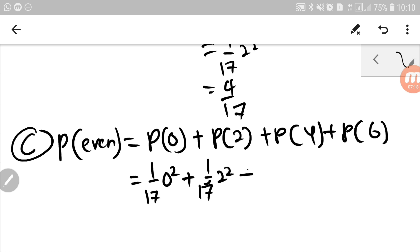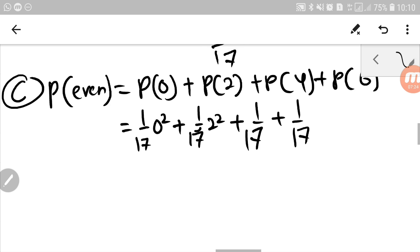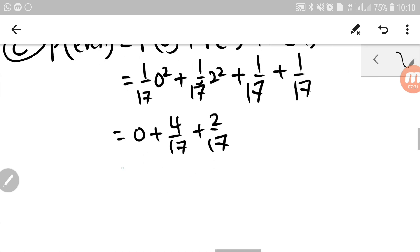plus 1 over 17, 2 square, plus 1 over 17, plus 1 over 17. So I have 0 plus 4 over 17, plus 2 over 17. Therefore, the answer is 6 over 17.